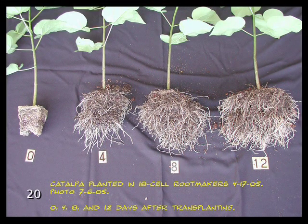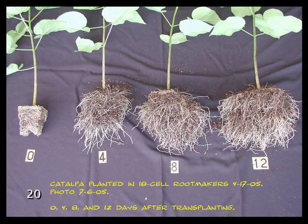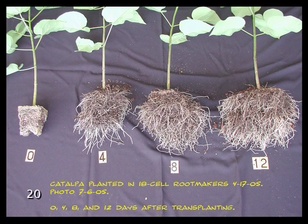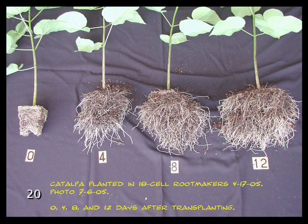To determine the rate of root extension following transplanting, catalpa seedlings were evaluated after 0, 4, 8, and 12 days. Note the tremendous number of roots produced and their length after only 12 days — the original root ball is 3.25 inches square and 4 inches deep, yet roots had grown in all directions. When stem growth is supported by vast numbers of roots, stem taper and strength is enhanced. By contrast, with conventionally grown or native trees, few distinct root flares develop; the entire base of the tree becomes a root flare and remains more or less uniformly bulbous.